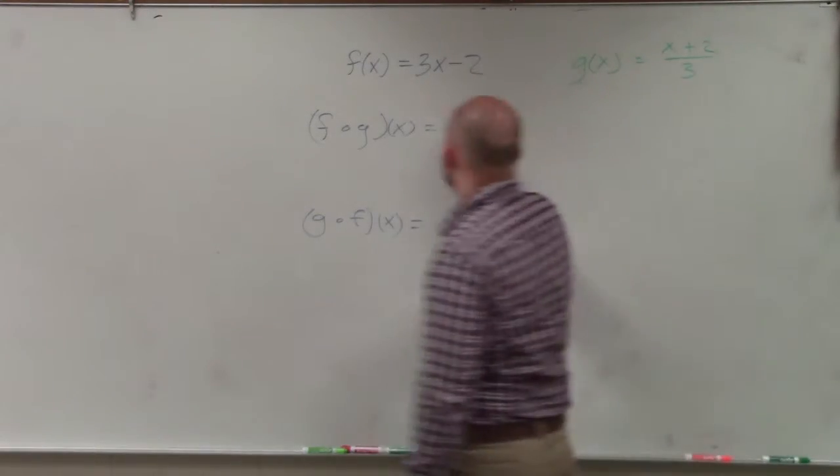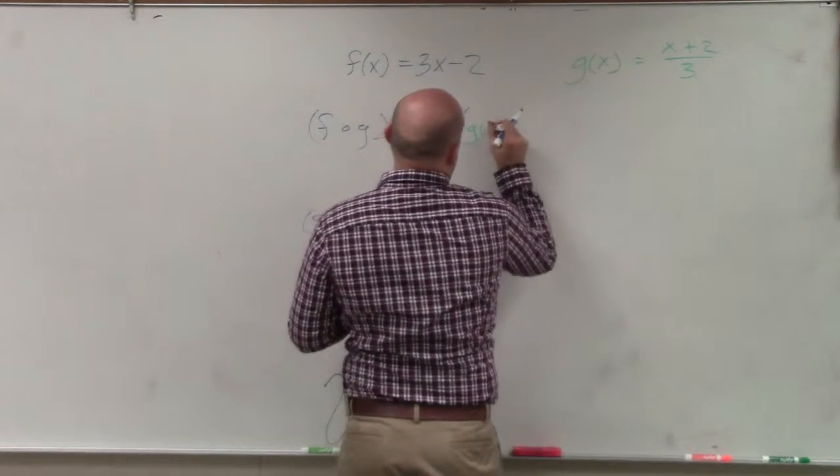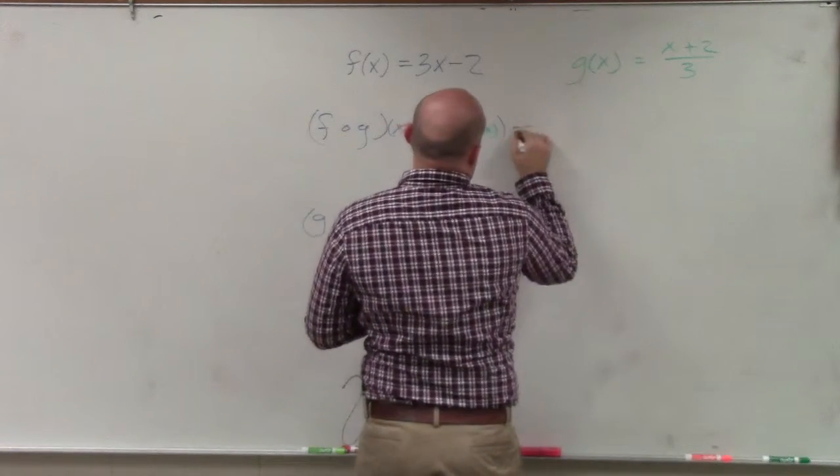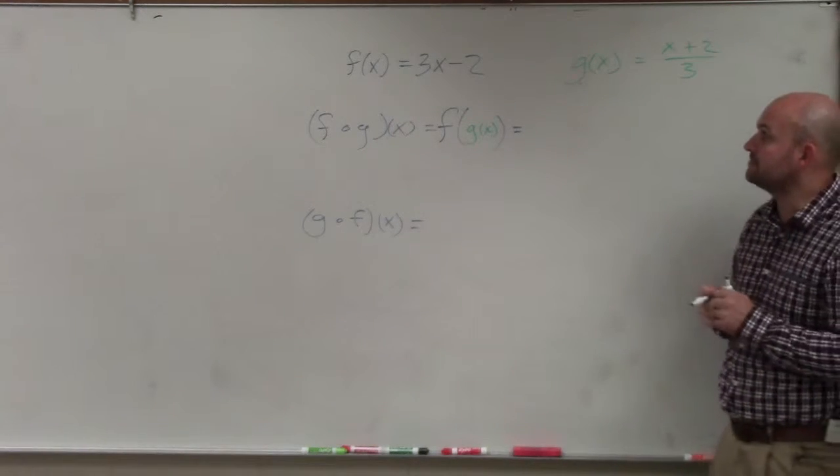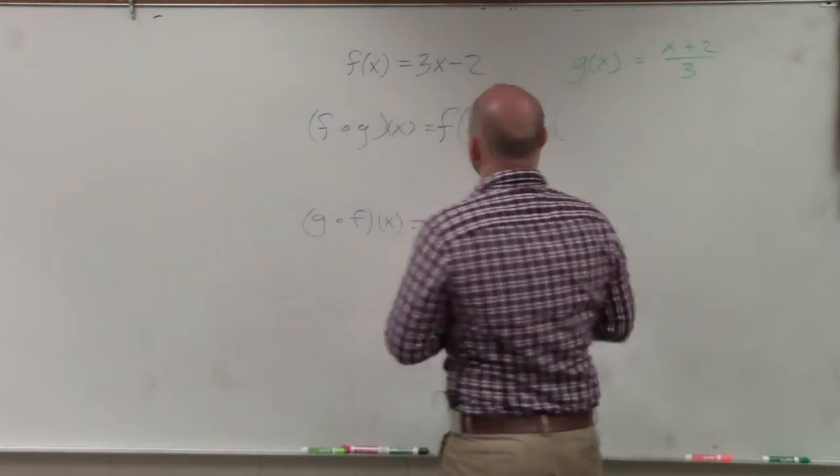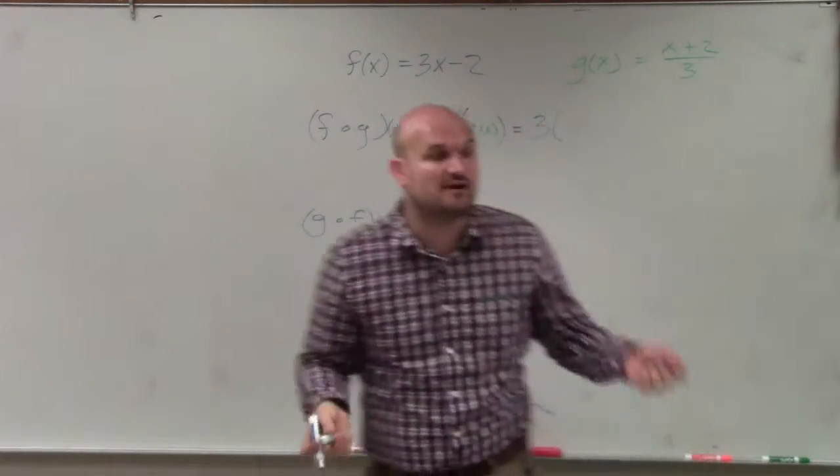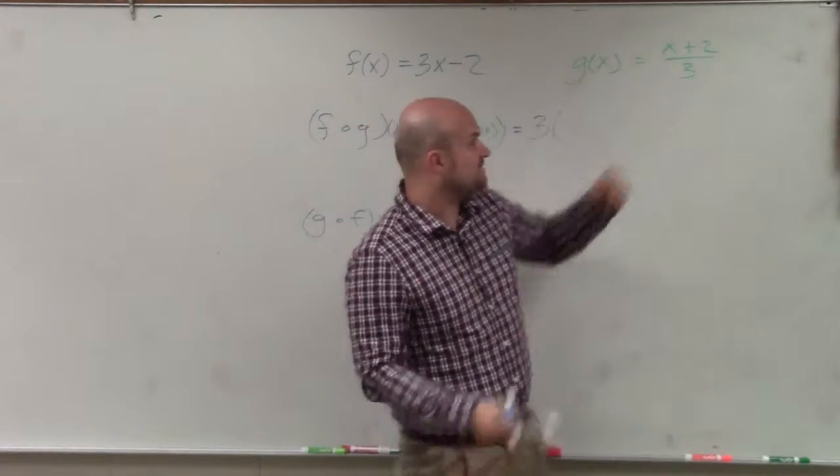So remember, f of g of x is the same thing as saying f of g of x, meaning basically you're taking the g of x function, and you're plugging it into the f of x function. So I take my f of x function, and I do 3 times parentheses. And instead of my input variable being x, it's now g of x. And g of x represents x plus 2 over 3.